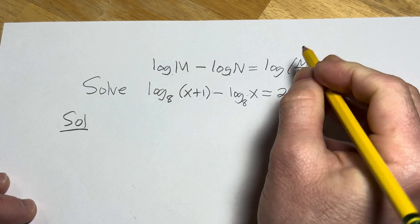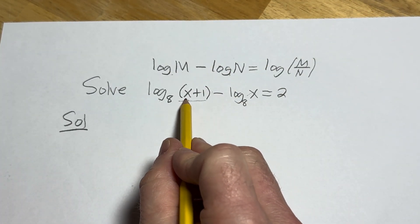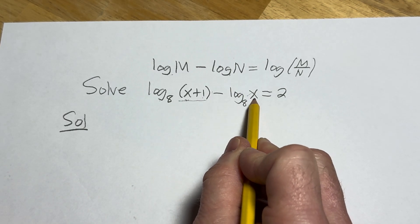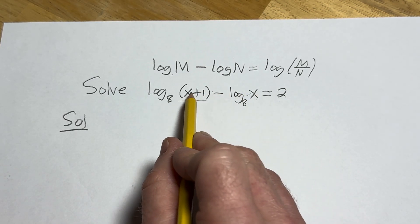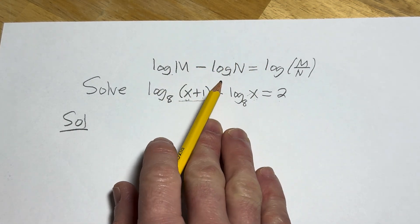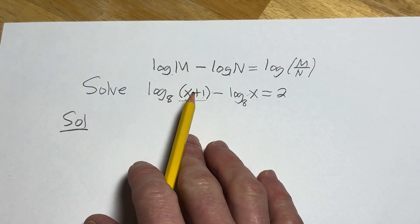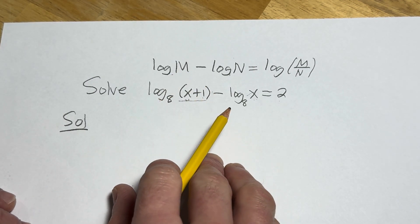Now the positive number part is going to be important later, but for this to make sense, x plus 1 has to be positive, and this means that x has to be positive. So both of those things have to be true in this problem. But we can just wait till the end to check by plugging in our answers and making sure that they're correct. Anyways, let's go ahead and apply this quotient rule here to our problem.